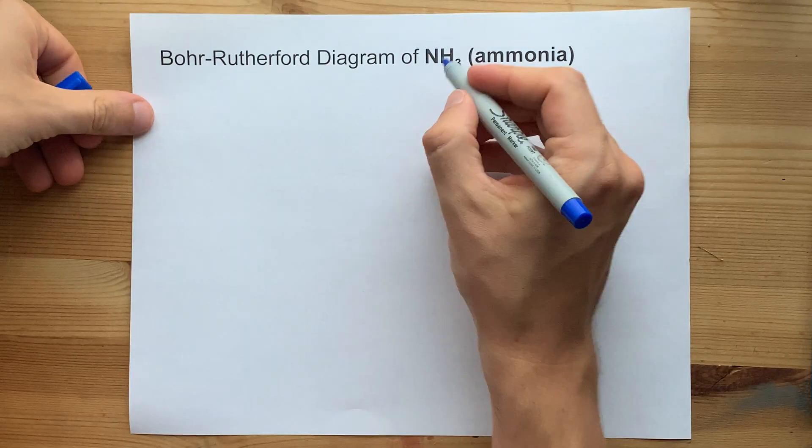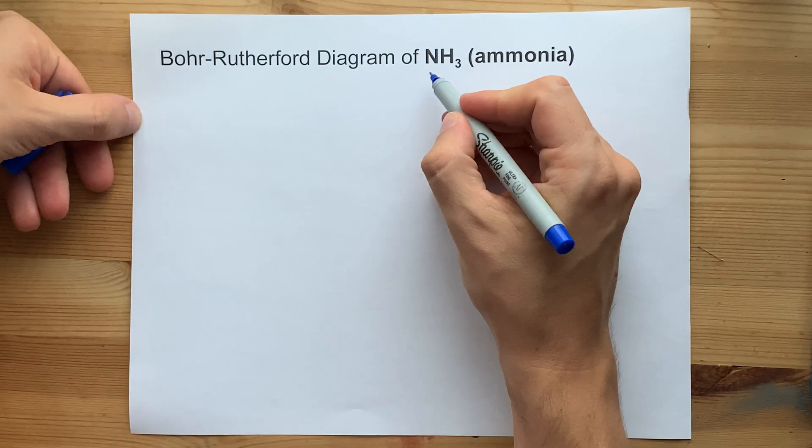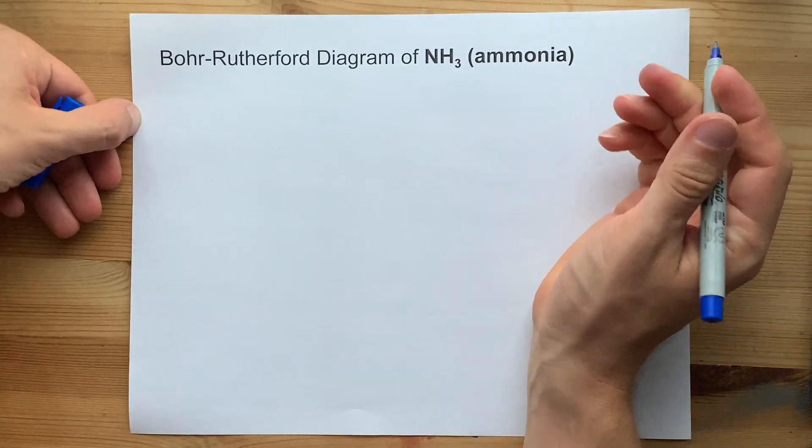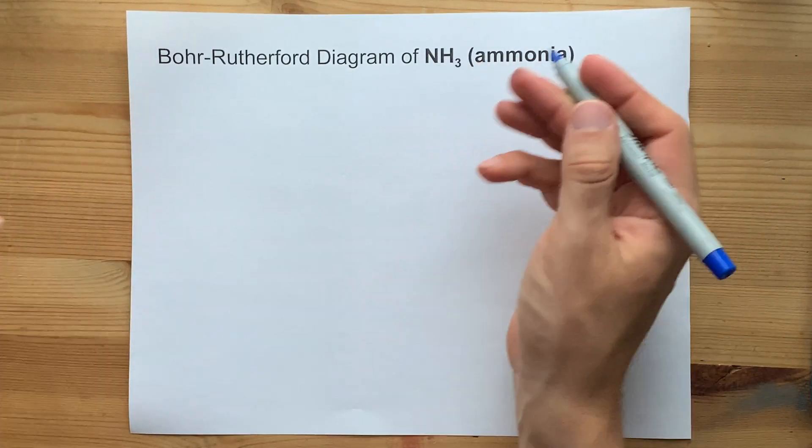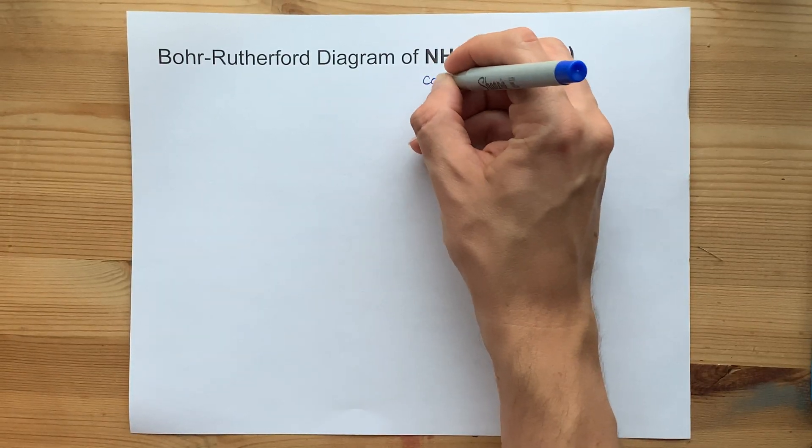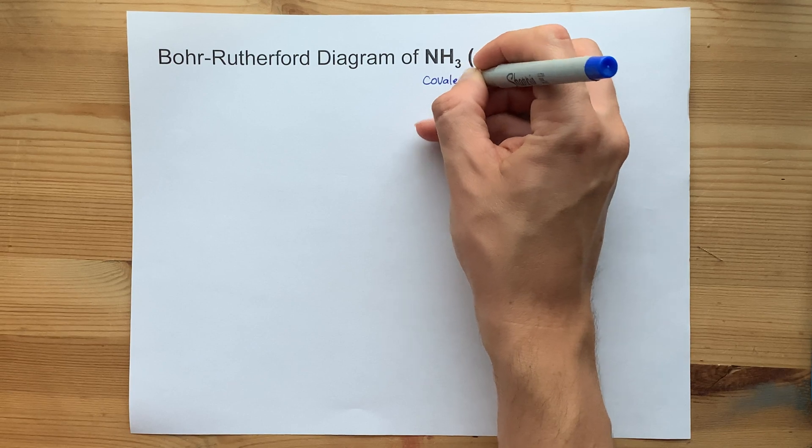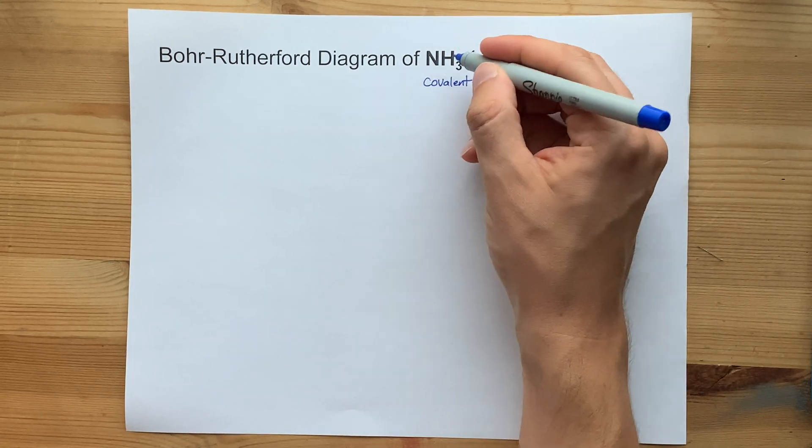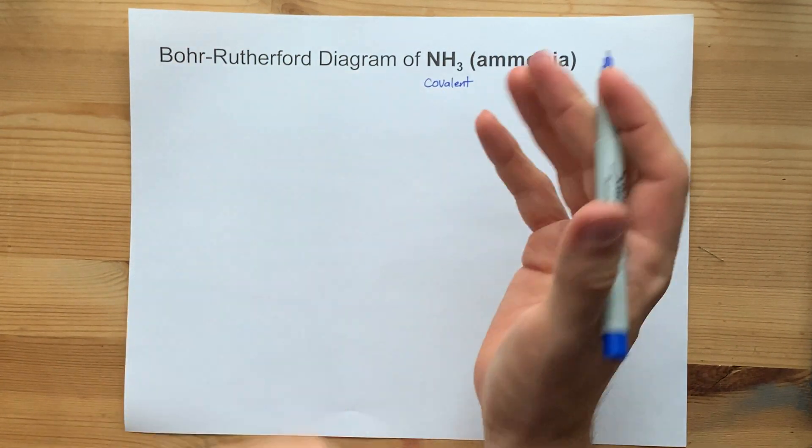Now what's important here is the chemical formula. We need one nitrogen and three hydrogen atoms, but what's also important is the type of bonding. These are all non-metals, and so it is going to be covalently bonded. The nitrogens and hydrogens are going to share electrons.